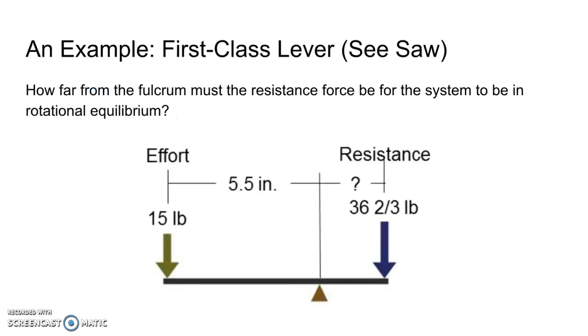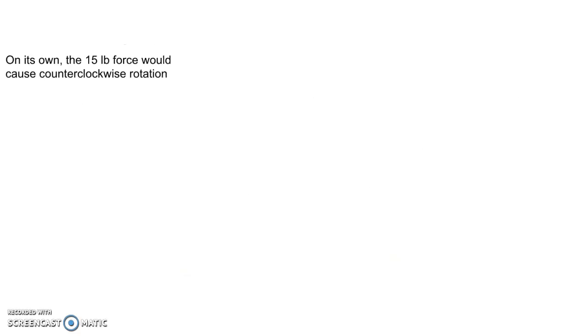Here's an example. I think that what I'll do is I will walk through this example and then I'll cut it off and create a second video for another example later on. Pretty typical example here. We have a first class lever, a seesaw. How far does the force on the right need to be placed from the fulcrum in order for that system to be in rotational equilibrium? In other words, for things to not move.